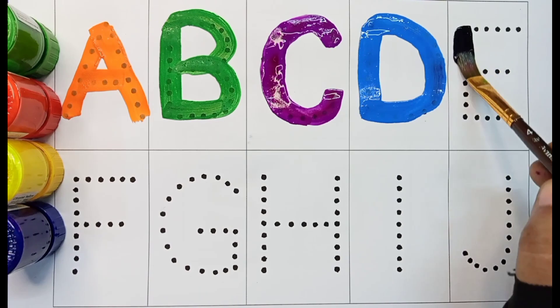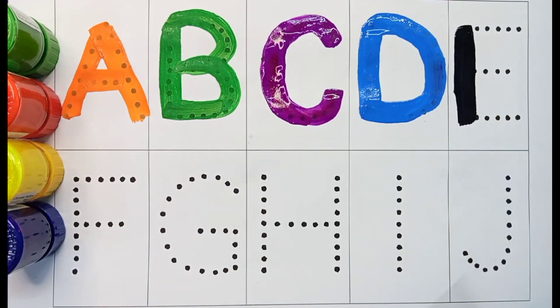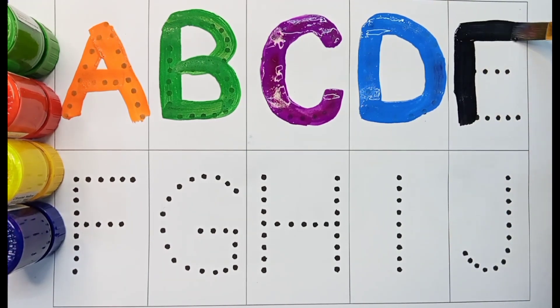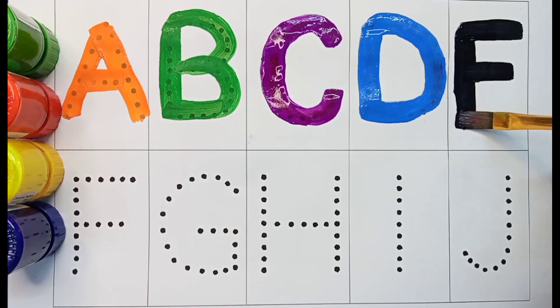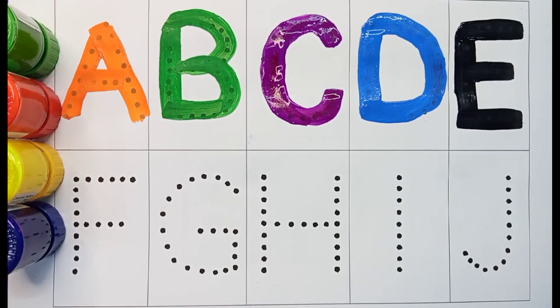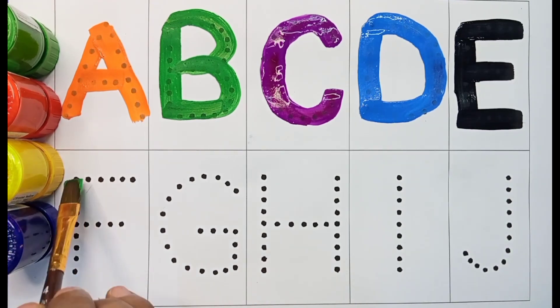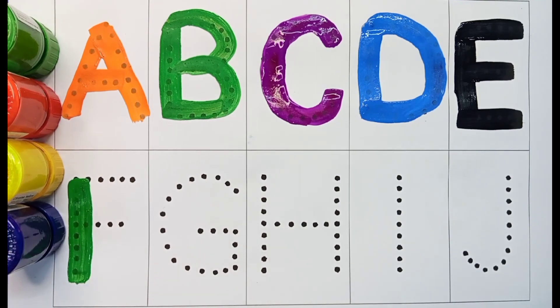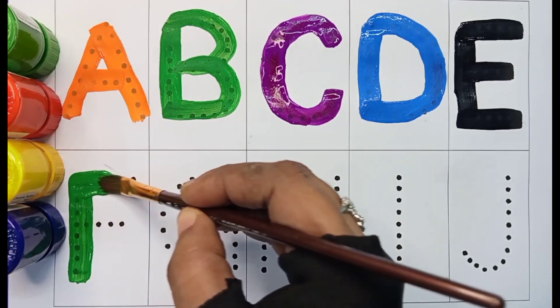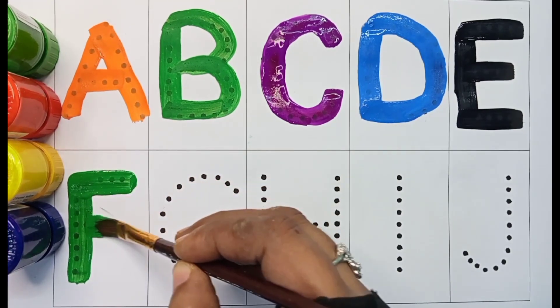Black color E. E for elephant. Green color F. F for flower.